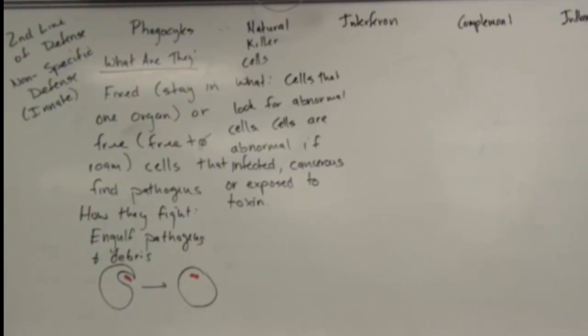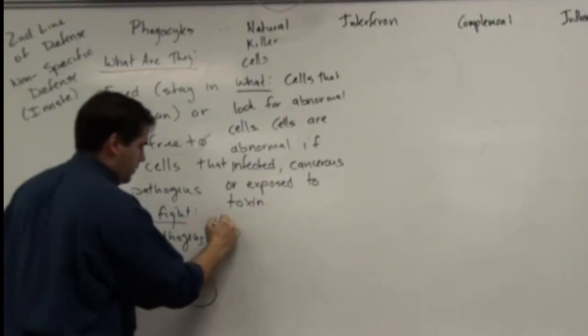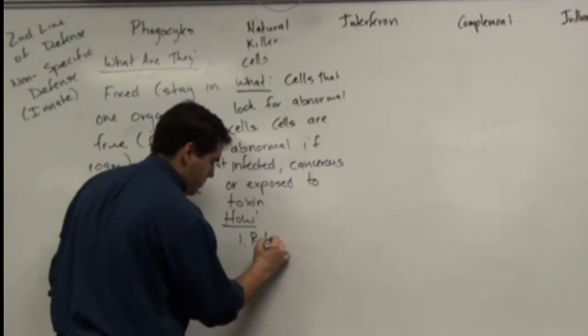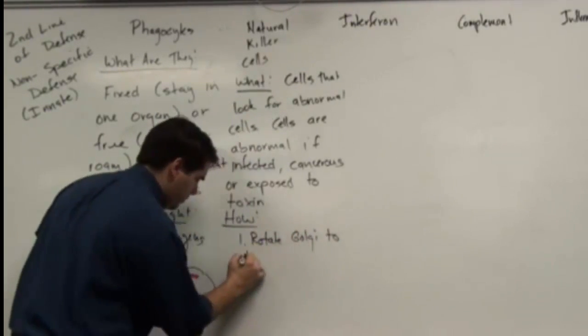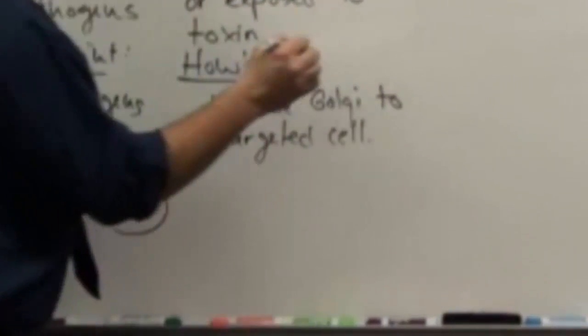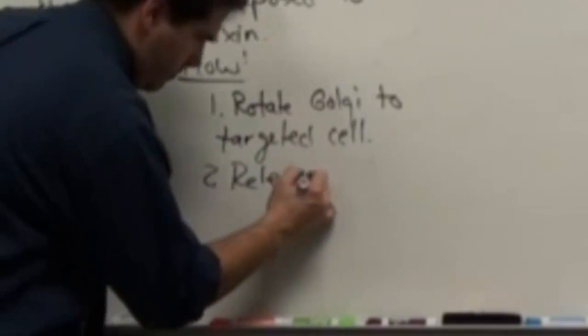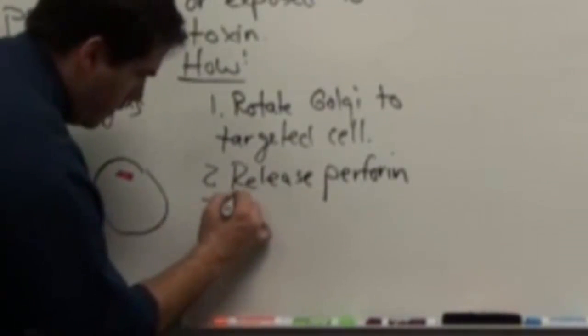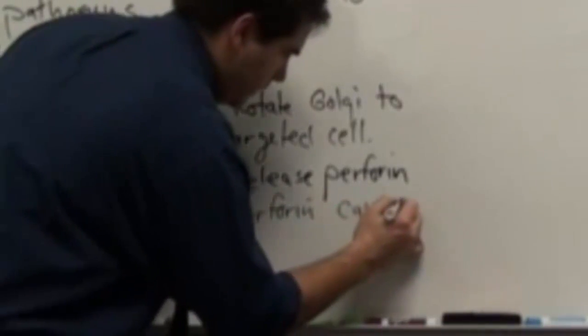So how natural killer cells fight is the first thing they do is they rotate their Golgi towards the targeted cell. The Golgi, metaphorically speaking, is the shipping department of the cell. You're going to export proteins through the Golgi. The ER makes it, the Golgi sorts it, quality controls it, and ships it out, so to speak. So essentially, you're rotating your protein machinery towards the target. You're going to release a protein called perforin. And just as the name suggests, it's going to perforate the target. So perforin causes cell lysis.